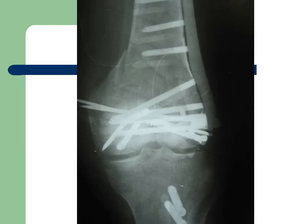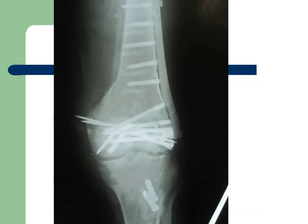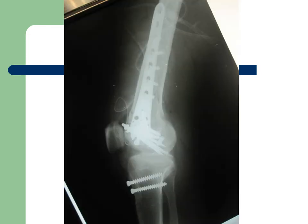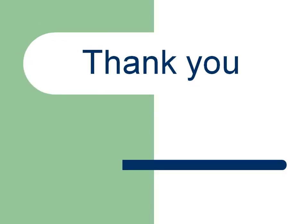In my case, I fixed the bicondylar fracture — first fixing with screws, then using a locked compression plate after the tibial tuberosity osteotomy. This is the result as seen on AP and lateral X-ray. Thank you very much.